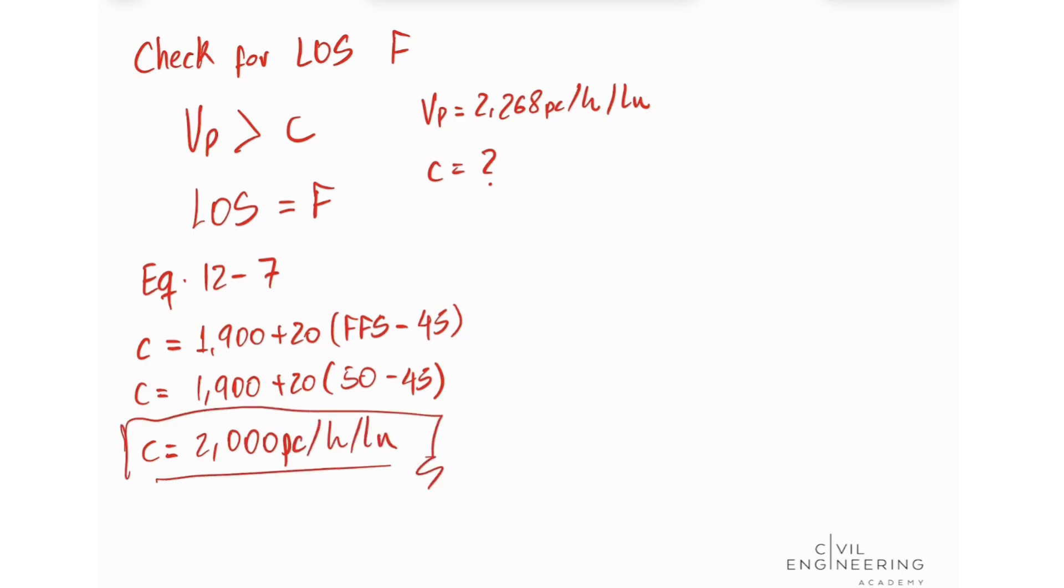Now we can compare these two values. And we see that our volume flow rate is greater than our capacity. So we can conclude that our level of service is equal to F. This concludes this exercise. I hope you learned a lot and I see you next time.